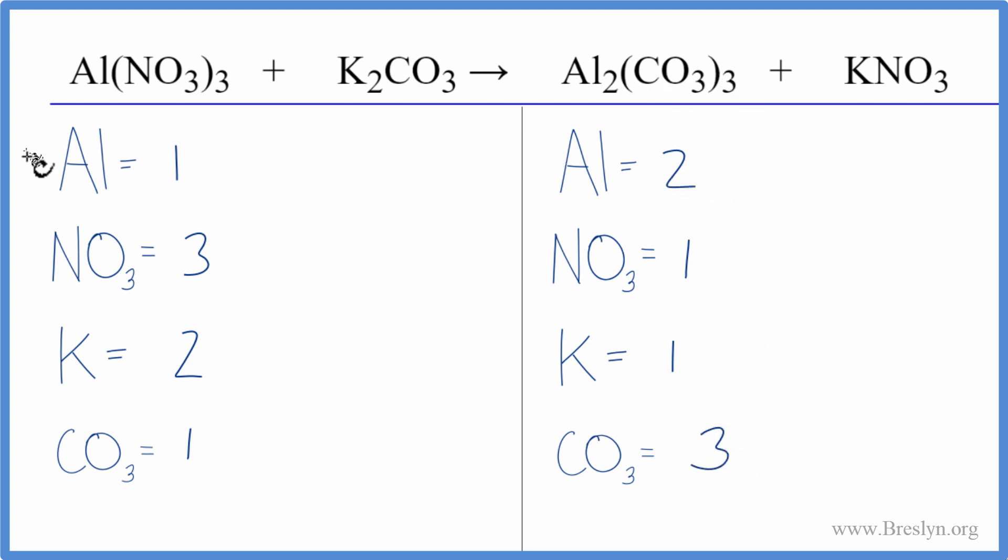Let's start by balancing the aluminum atoms. We could put a two as our coefficient in front of the aluminum nitrate, one times two. That's balanced. So we have two aluminums and then we have the three times one. So we have three nitrates times two. That'll give us six of those.